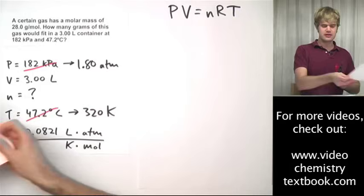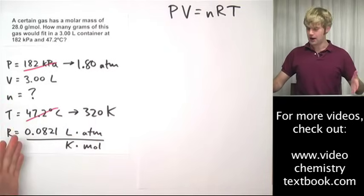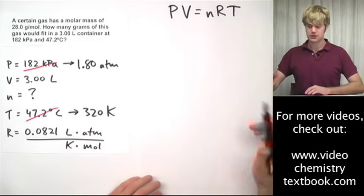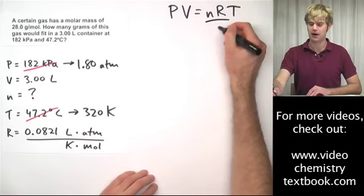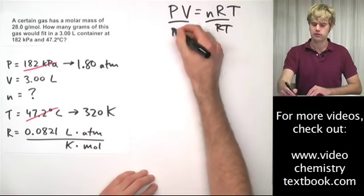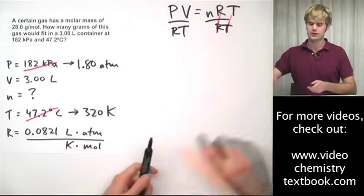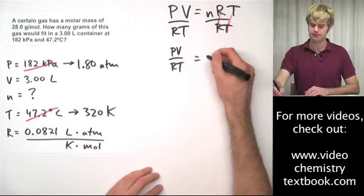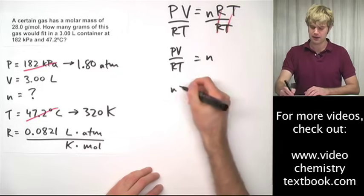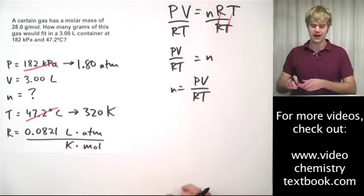So now everything that I have matches the units on R and I'm ready to go about solving this. So PV equals nRT, I'm solving for n. Divide both sides by RT. Now those guys cancel out. I get PV divided by RT equals n. Or if you want to flip it, I can have n equals PV divided by RT.